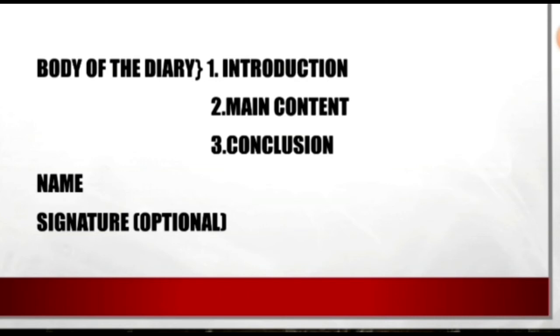Students, whenever we are writing diary entry, we have to use simple past tense - subject plus V2 plus object. Sometimes we can use present perfect tense also - subject plus have or has plus V3. Whenever you are saying about your future plans in the conclusion, you have to use subject plus will or shall plus V1. And one more thing that is very important: whenever you are writing diary, you have to use first person narrative. That means I - you have to say your own experiences.